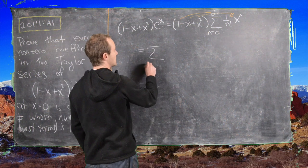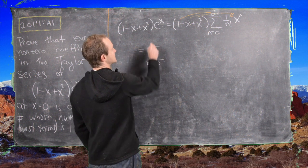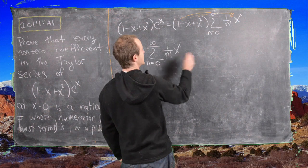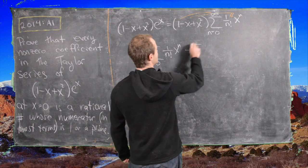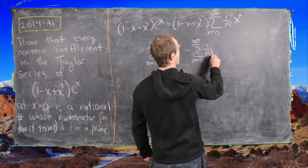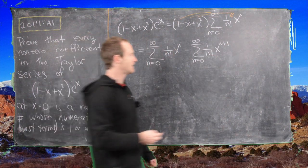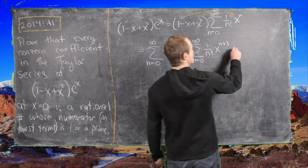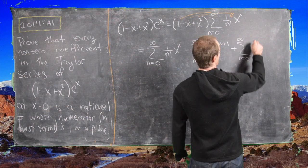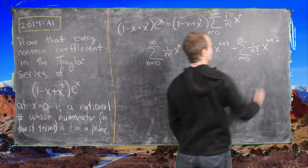So we'll get the sum from n equals 0 to infinity of (1 over n factorial) x to the n, minus the sum from n equals 0 to infinity of (1 over n factorial) x to the n plus 1, and then plus the sum from n equals 0 to infinity of (1 over n factorial) x to the n plus 2.